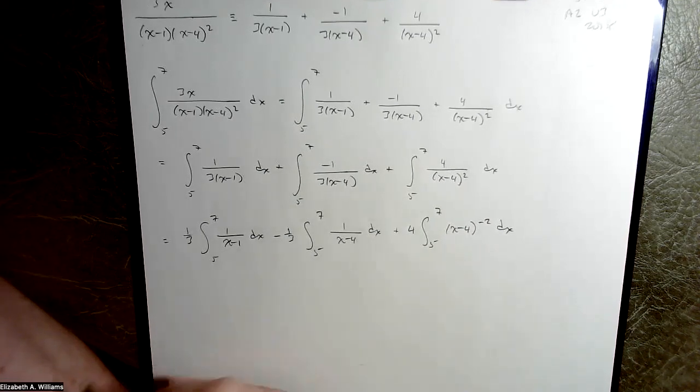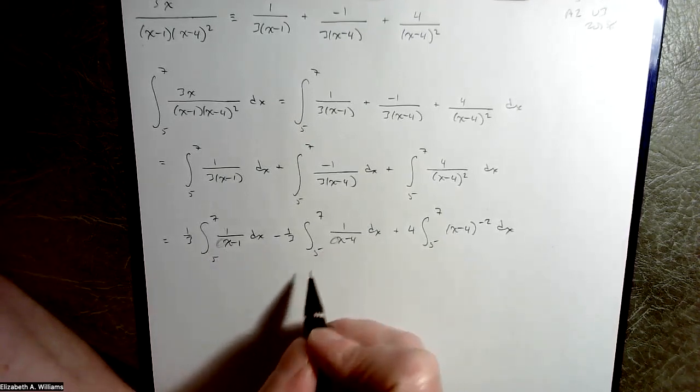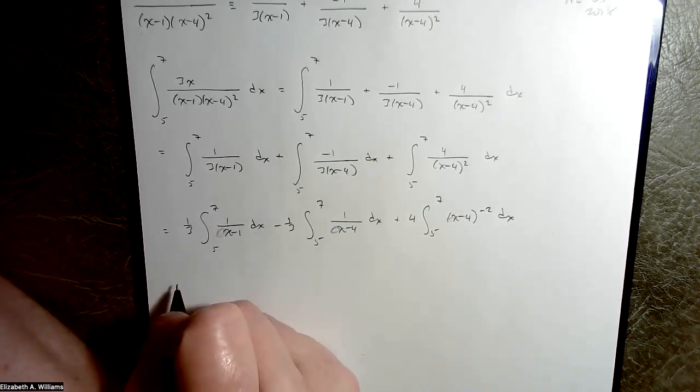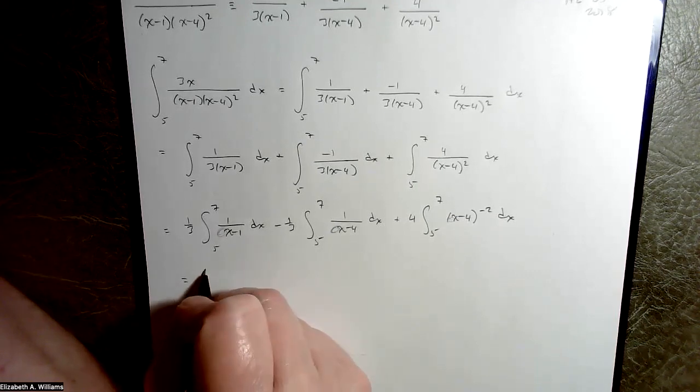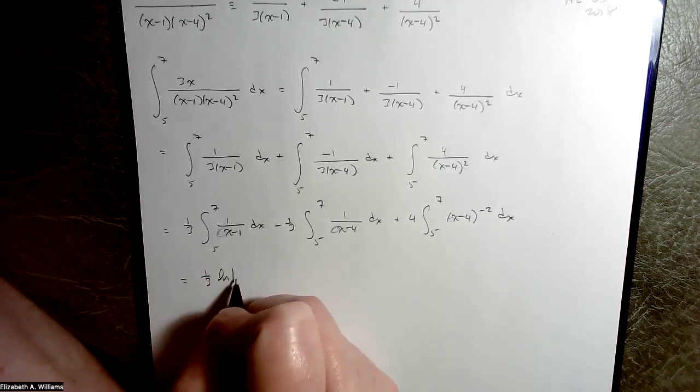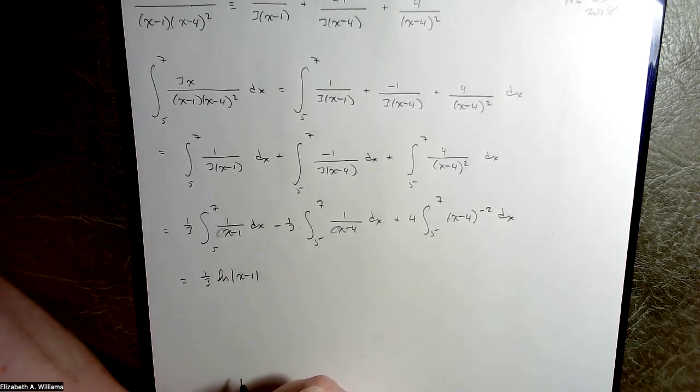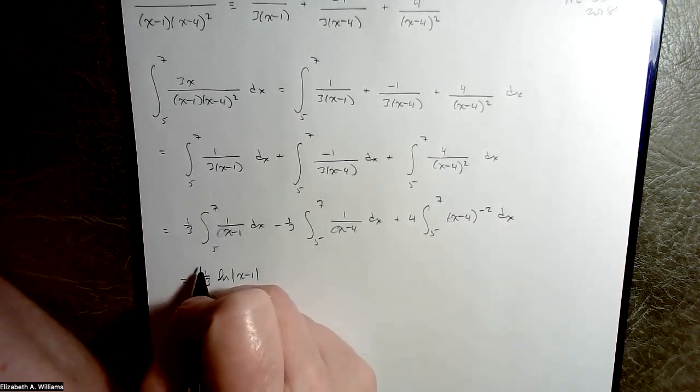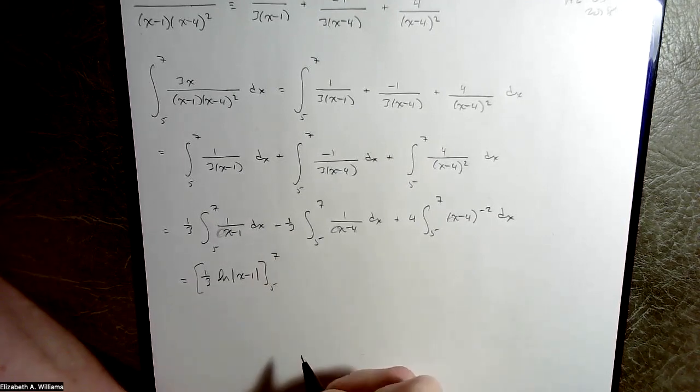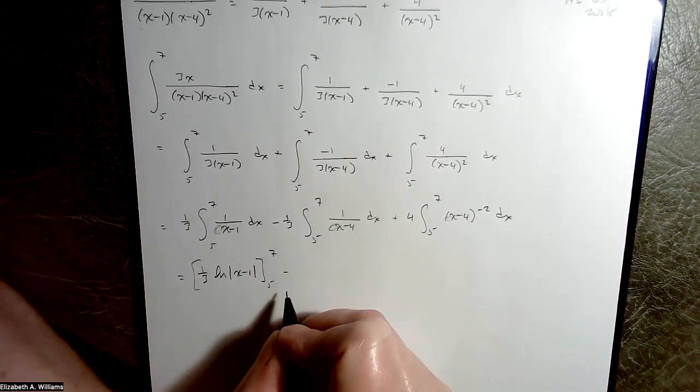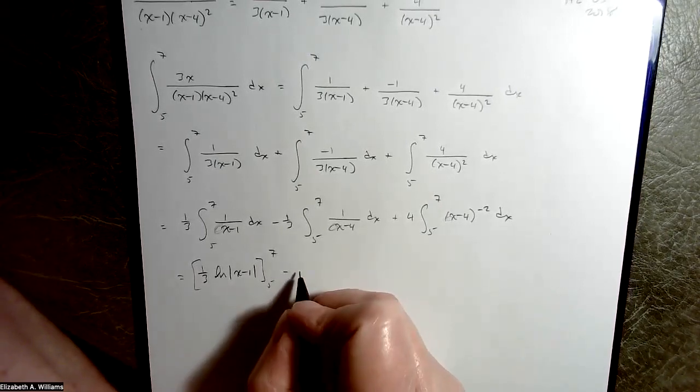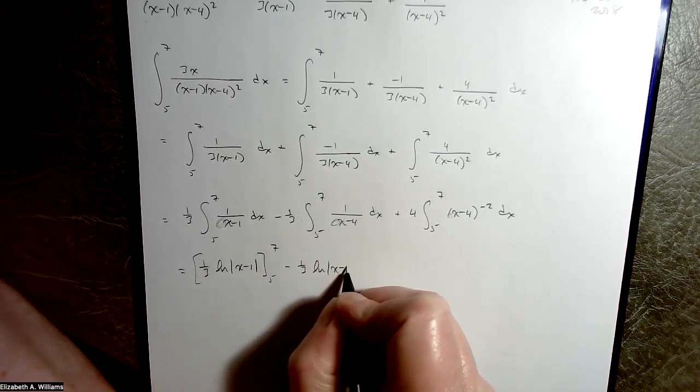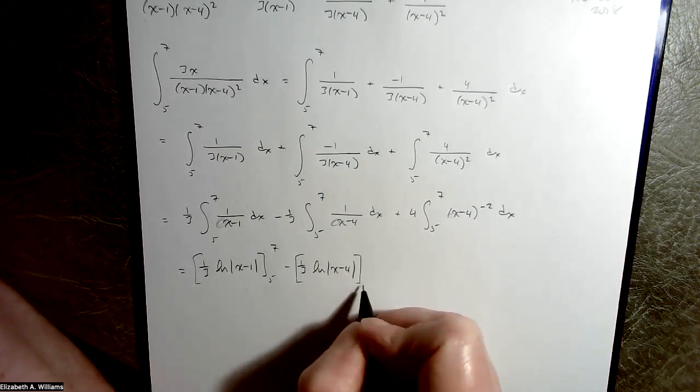This is all very nice because the coefficients on all my x's is 1. So I don't have to do any fancy chain rule stuff. The first one is going to be 1/3, and this is going to be natural log of x minus 1. We have to use absolute value because logs won't eat negatives, and we're evaluating that from 5 to 7.